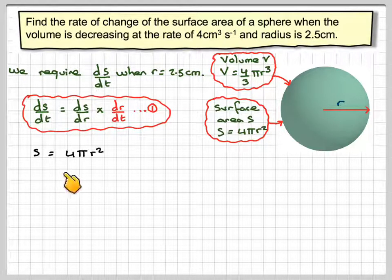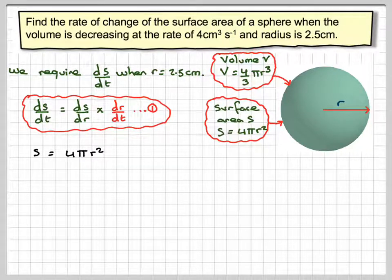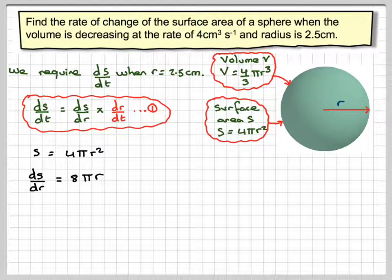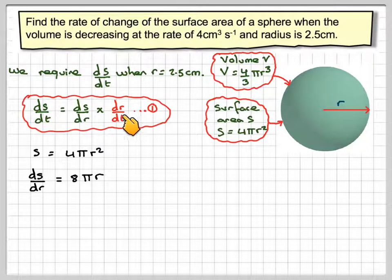So S equals 4π r². If we differentiate that we get 8π r — bring the two down to the front. So we've got ds/dr, but we haven't got dr/dt yet.